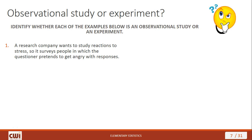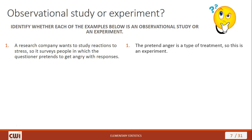Let's go through some examples to see whether we're looking at an observational study or an experiment. First example: a research company wants to study reactions to stress, so it surveys people in which the questioner pretends to get angry with responses. This is an example of an experiment. The pretend anger is a type of treatment — you're trying to influence the response that's given. Because of that attempt to influence, this is an example of an experiment.